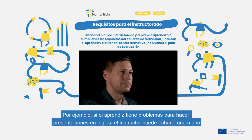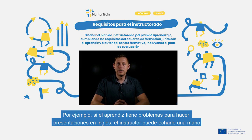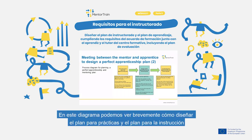For example, when the apprentice has problems making presentations in English, then the mentor can offer to have meetings in English. On this picture we see a simplified process diagram of how to design a mentoring and apprenticeship plan.